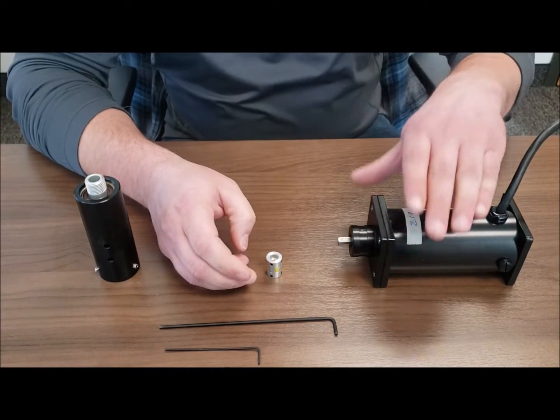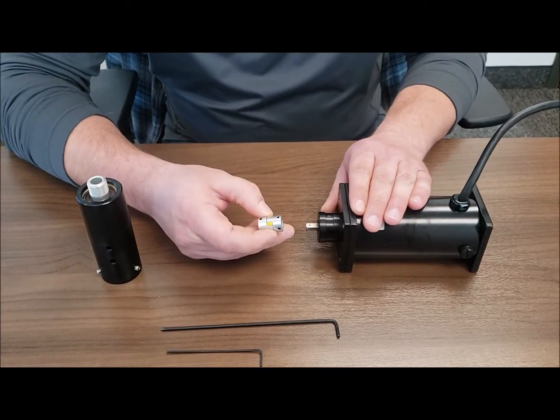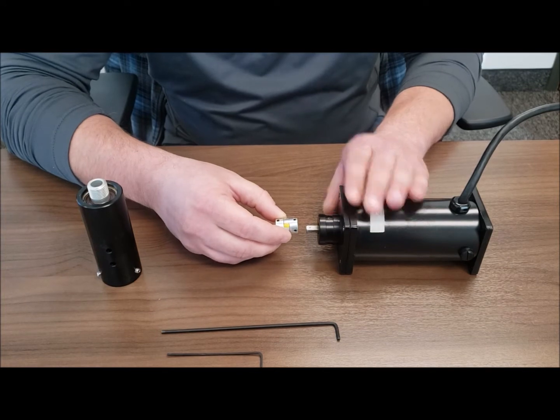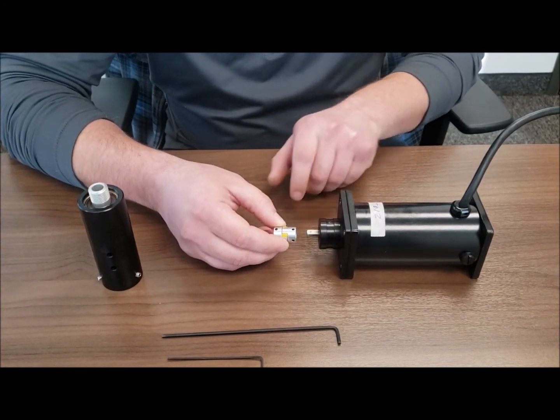To start, take the spindle motor and place the coupler onto it with one side facing the flat portion of the motor shaft.